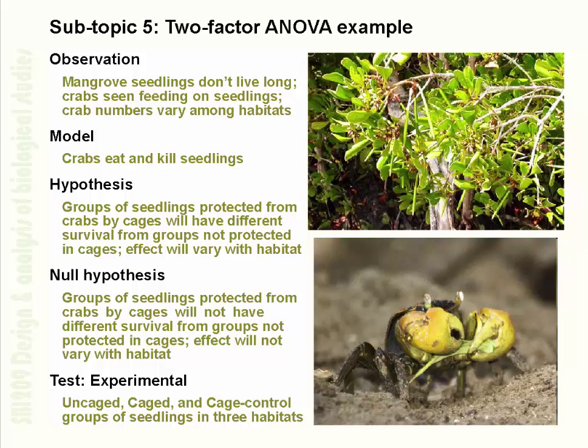This is another example of a two-factor analysis of variance. The scenario involves mangrove crabs — you can see an image on screen. This particular crab comes in two color forms: a yellow form and a red form. It's quite common in mid to upper tidal parts of mangroves in and around Darwin Harbour. The top image shows propagules, that is, partly growing seedlings from mangroves. The mangrove crabs eat leaves but may also eat propagules.